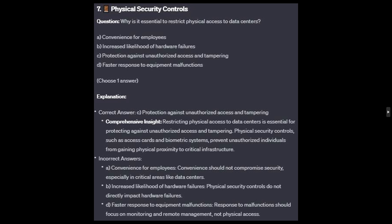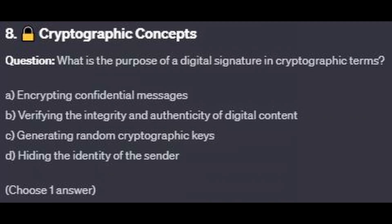For the incorrect answers: convenience for employees — convenience should not compromise security, especially in critical areas like data centers. Increased likelihood of hardware failures — physical security controls do not directly impact hardware failures. And faster response to equipment malfunctions — response to malfunctions should focus on monitoring and remote management, not physical access.